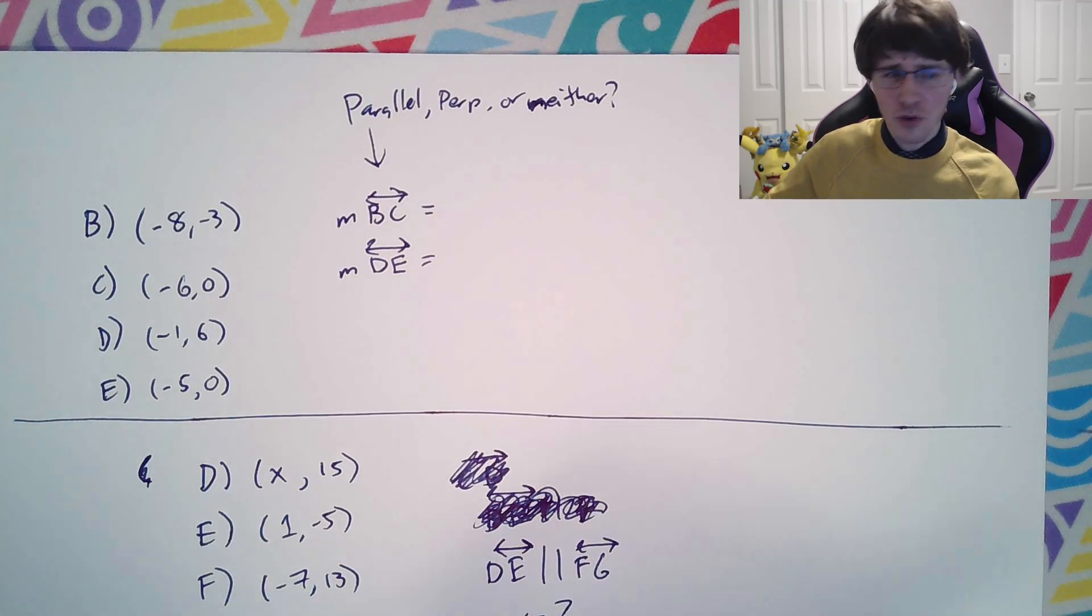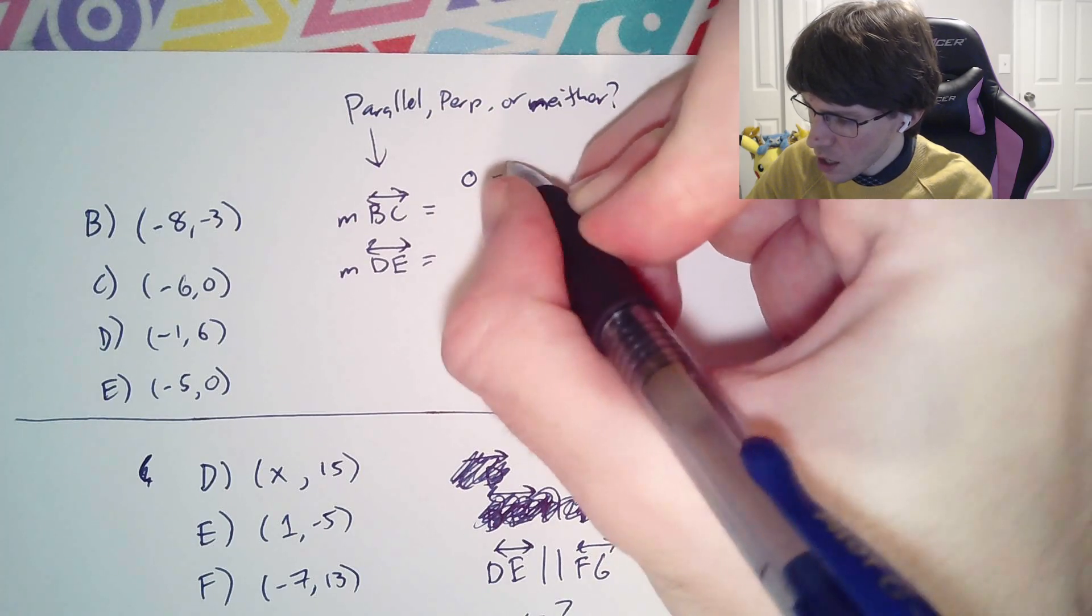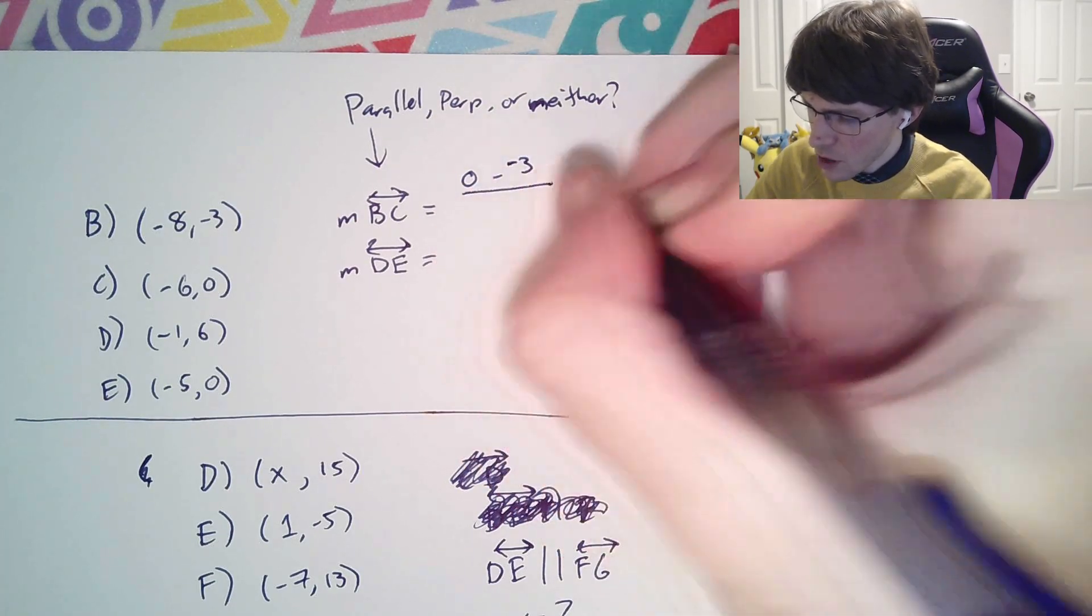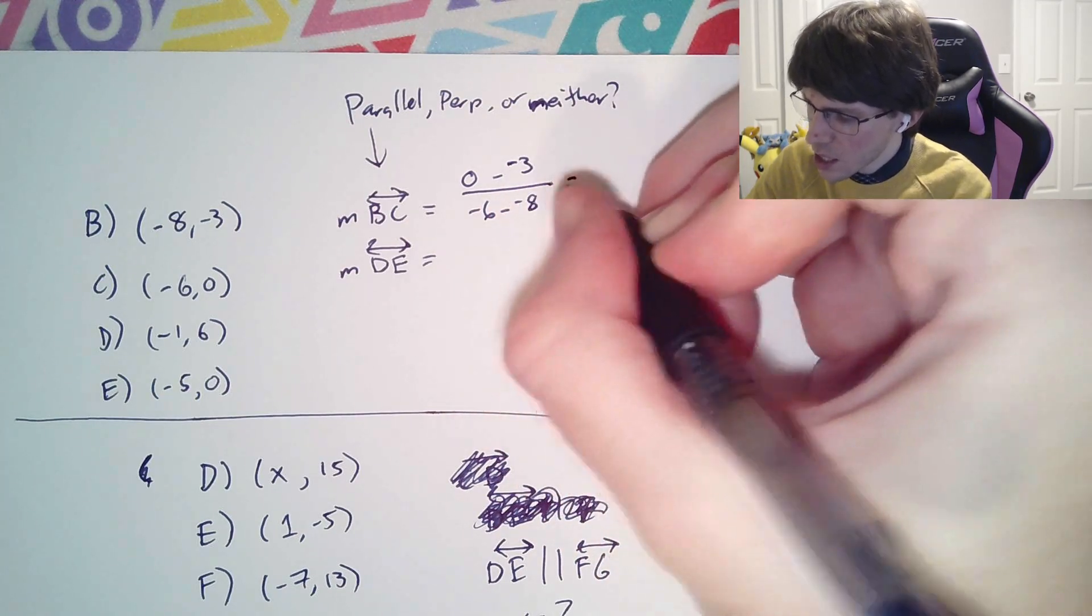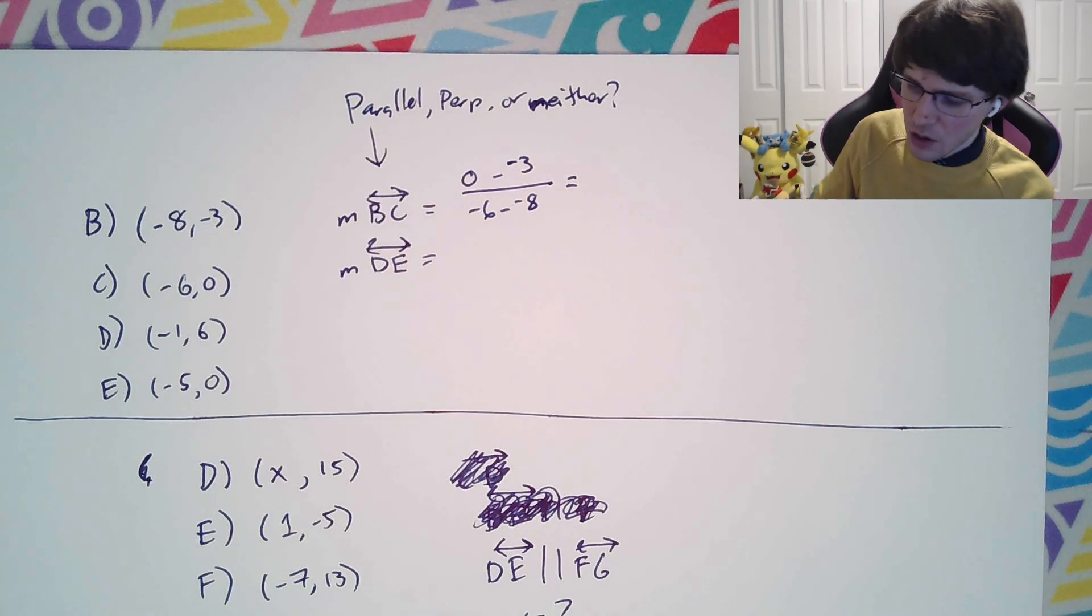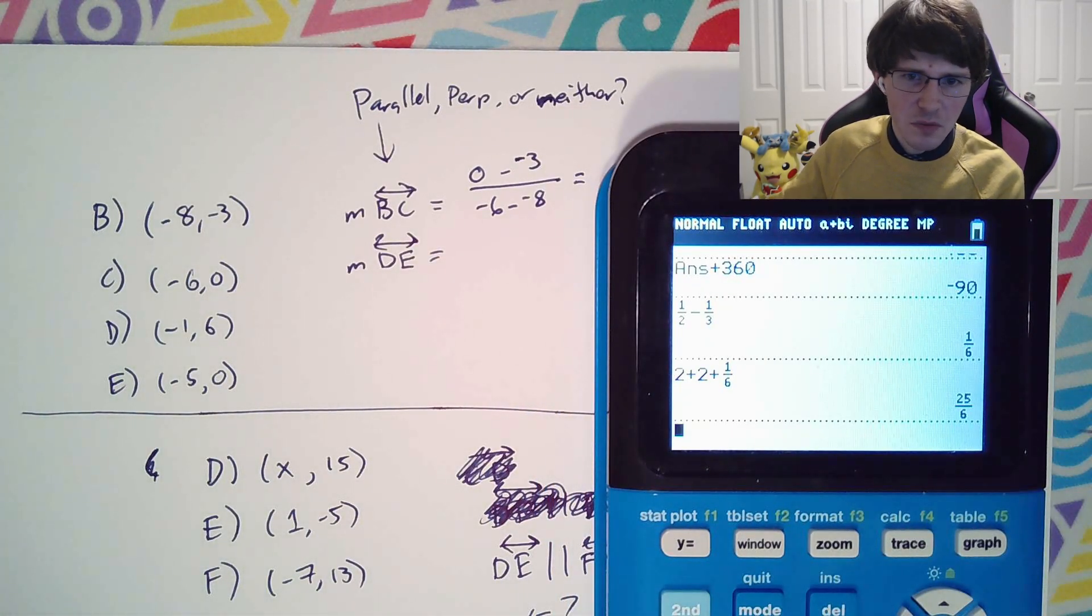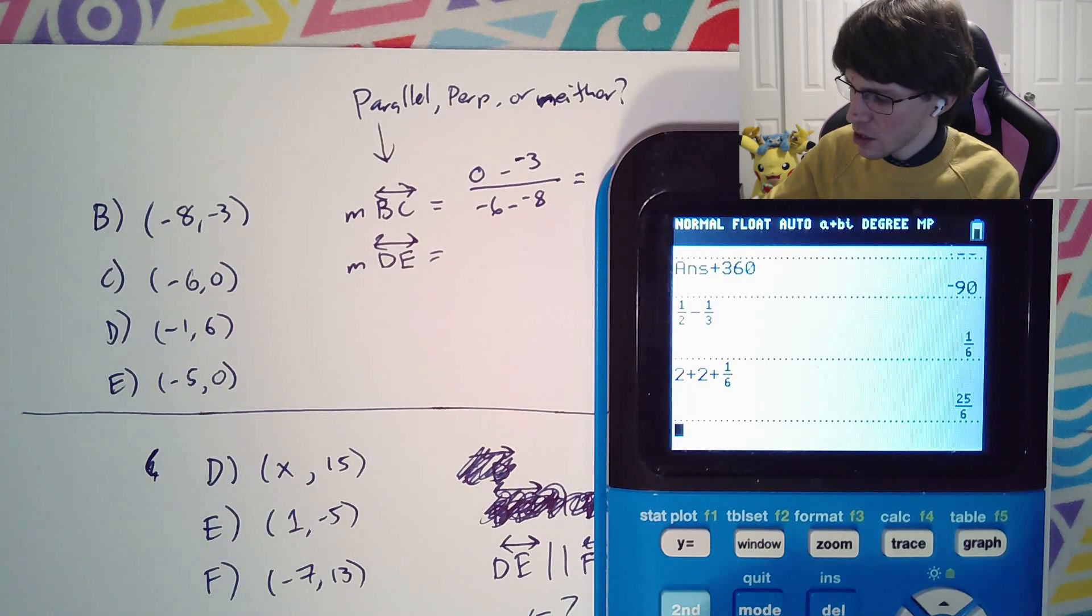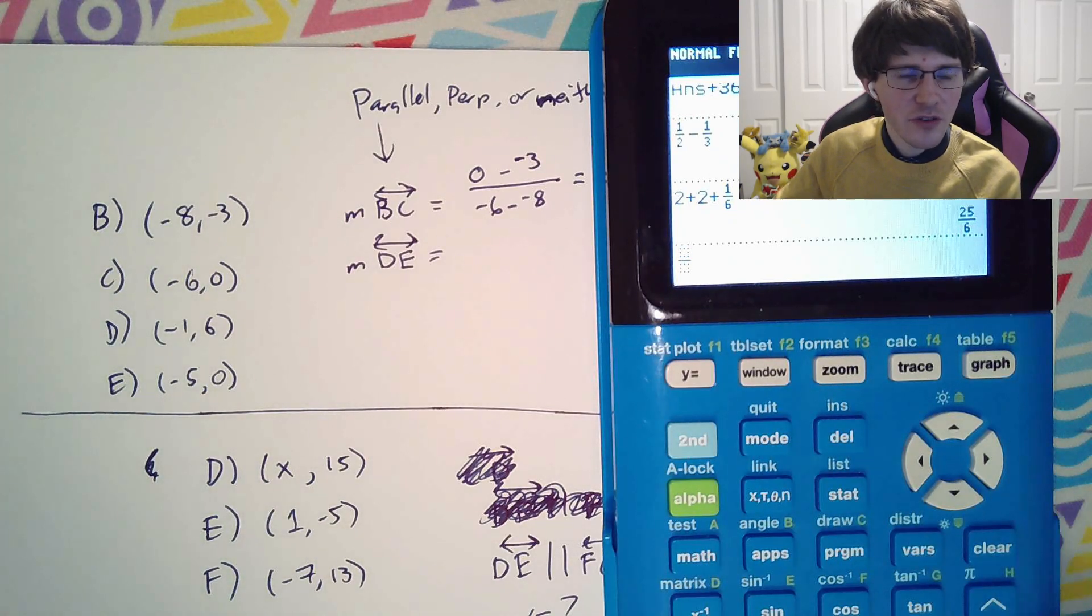I'm going to use the full version of the formula every time. So we have y2 minus y1 over x2 minus x1. You can use your calculator for this if you would like. Remember that your calculator, if you have one of these TI-84s, has a fraction button built in. The fraction button's right here. Alpha, y equals, enter. And you can type this in exactly as it appears.